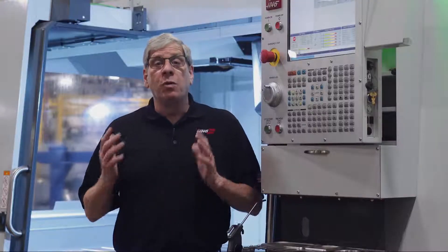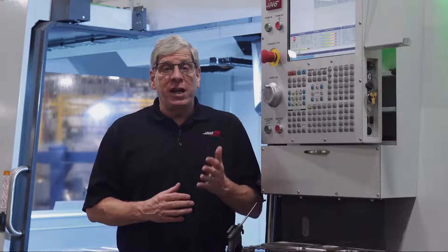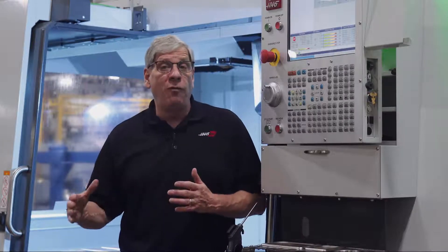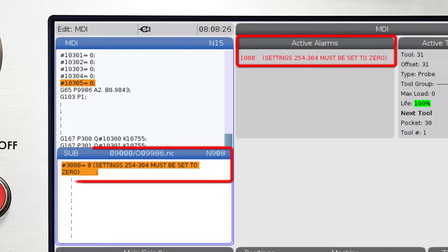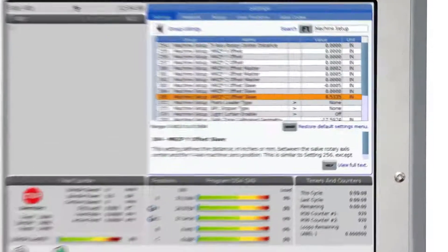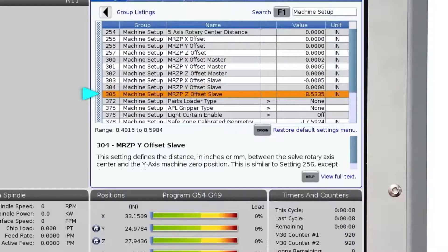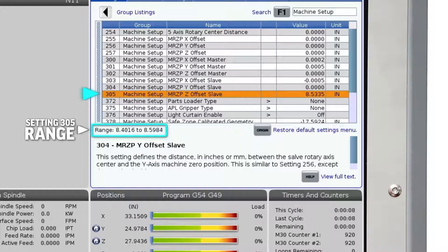To remove the compensations, change settings 300 through 304 to 0. If you forget this step and try to run the probing cycle, you will get an alarm telling you to change these settings to 0. The value in setting 305 is most likely going to be accurate, but if it happens to be out of range, the MRZP probing program will give an alarm and tell you the value that you need to enter into the setting before restarting the probing program.